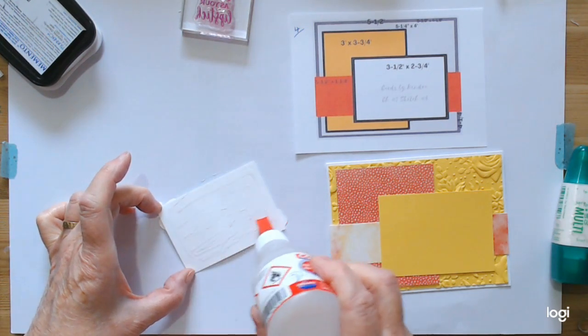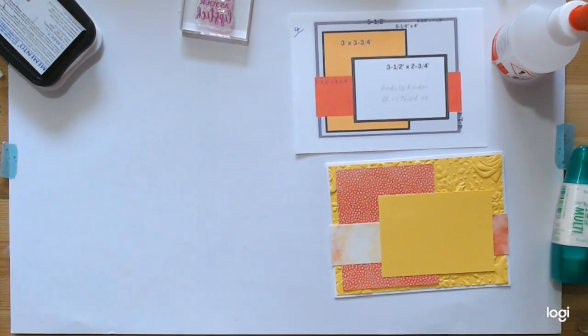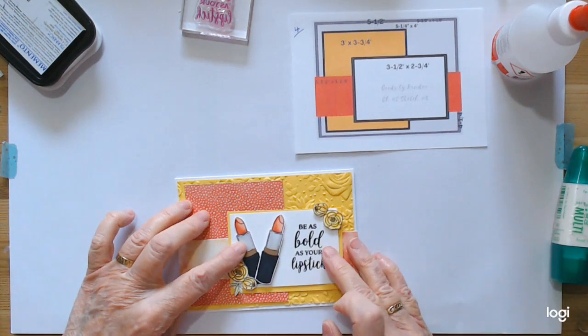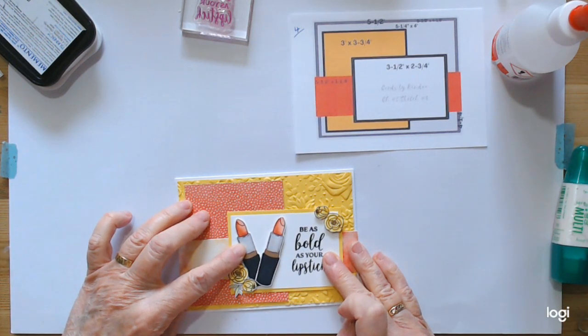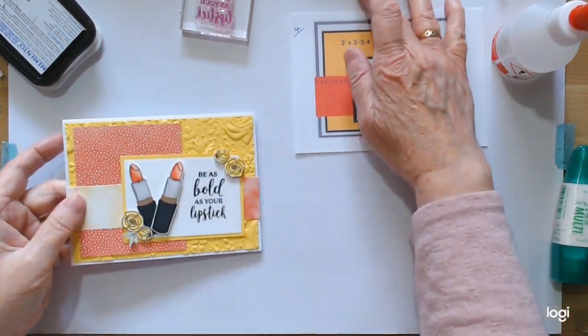And there you have a nice wee girly card. Getting bright and sunny colors for spring. Just make sure it's central. And there you have it.